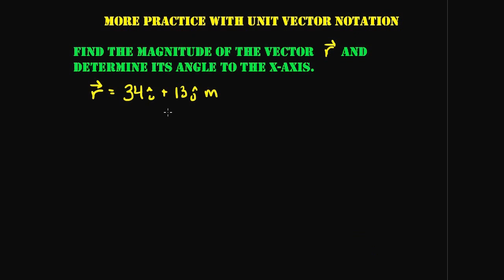Now let's say you have something in unit vector notation and you need to describe it as its magnitude and angle from the x-axis — the reverse process. Find the magnitude of vector r and determine its angle to the x-axis. The position vector is equal to 34 i-hat plus 13 j-hat meters.